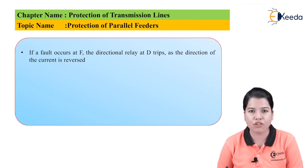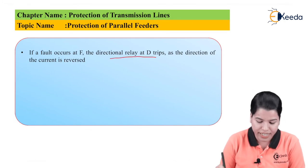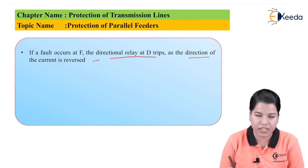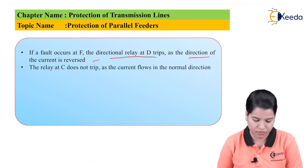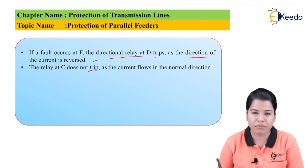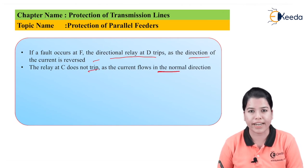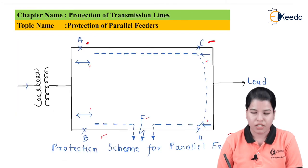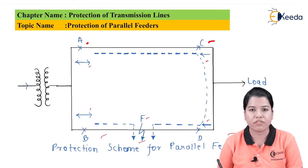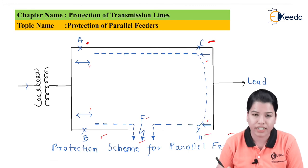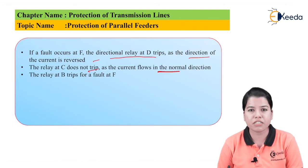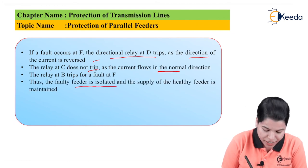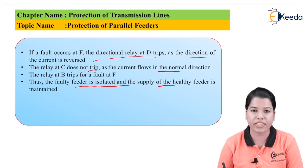Let us consider that a fault has occurred at point F. The directional relay at D will trip as the direction of the current is reversed. The relay at C does not trip as the current flow is in the normal direction. The relay present at B will also trip for the fault F. Thus, the faulty feeder will be isolated and the supply of the healthy feeder is maintained.